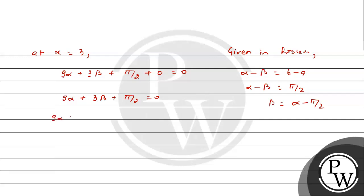Substituting 9α + 3(α - π/2) + π/2 = 0. This becomes 9α + 3α - 3π/2 + π/2 = 0. So 12α = π. This means the value of α is π/12.